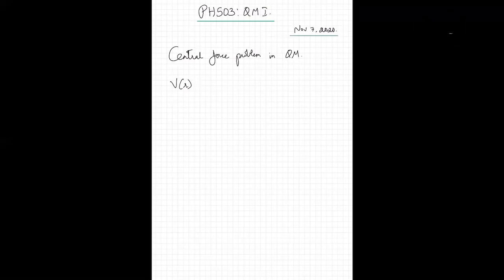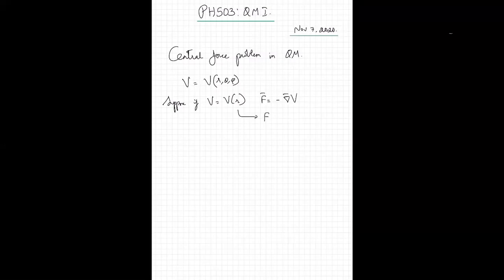In three dimensions, using spherical polar coordinates, the three coordinates are r, theta, and phi. In general, V is a function of r, theta, and phi. But if the potential does not depend on the angular coordinates — if V is a function of r alone — then the force derived from such a potential is simply F = −dV/dr, since F = −∇V but with no angular dependence.